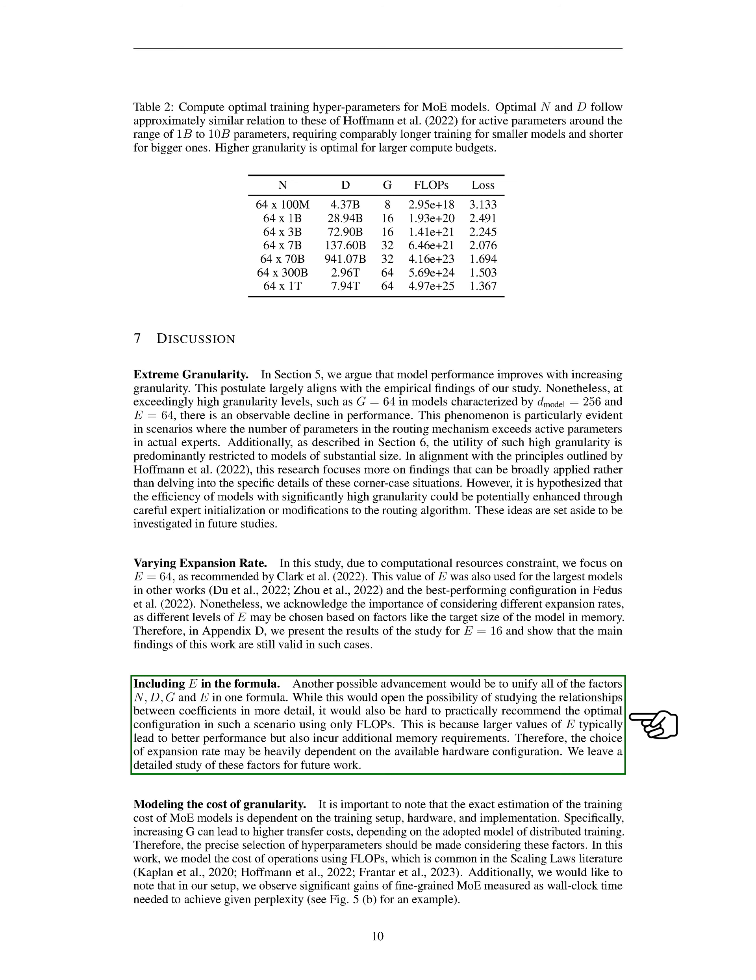Another aspect we considered was the potential to integrate all the factors, namely, the number of experts n, the depth d, the granularity g, and the expansion rate e, into a single formula. This integration could allow for a more detailed examination of how these coefficients interact with one another. However, recommending an optimal configuration based solely on flops, floating point operations per second, would be challenging in this context. This is because higher values of E often lead to improved performance but also require more memory, making the choice of expansion rate heavily dependent on the specific hardware setup available. We plan to explore these relationships in greater depth in future work.